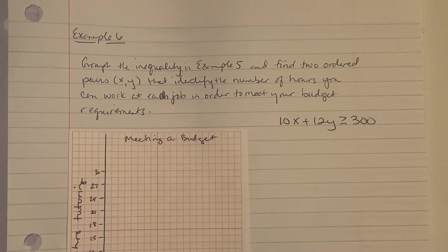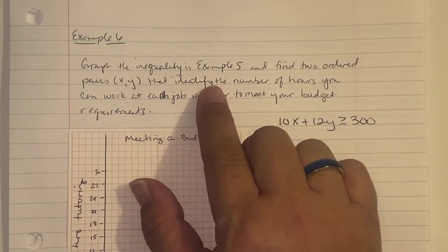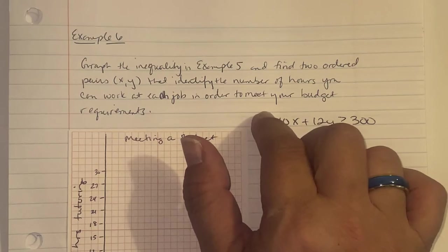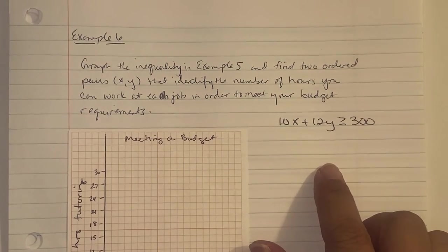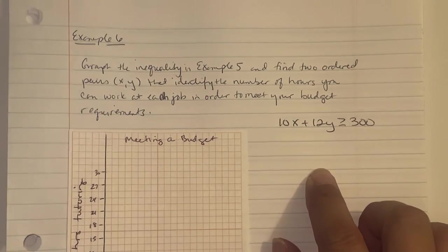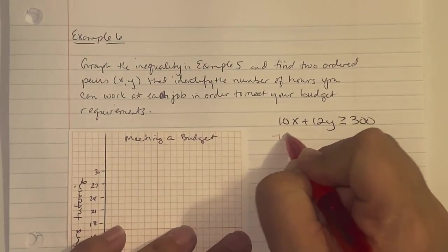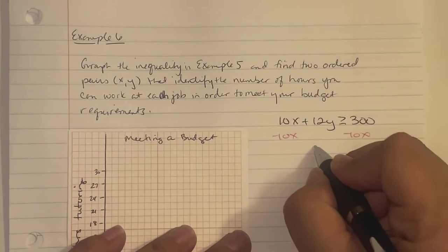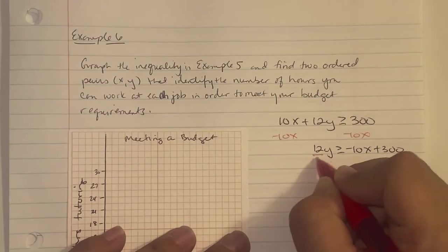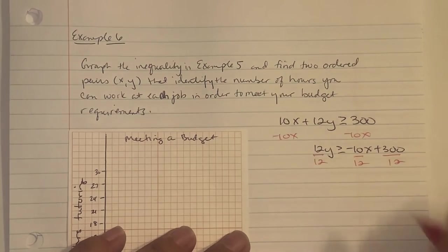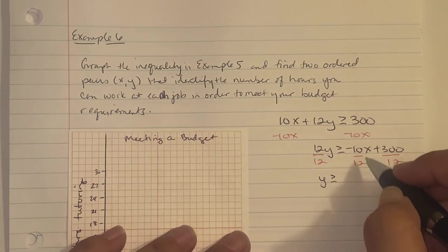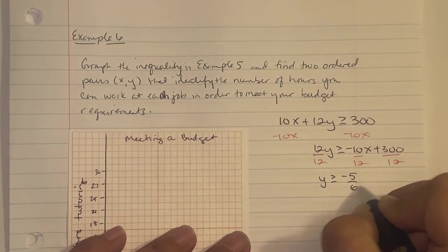Example 6 asks us to graph the inequality from Example 5 and find two ordered pairs that identify the number of hours you can work at each job to meet your budget requirements. We have 10X plus 12Y greater than or equal to 300. Solving for Y: subtract 10X — giving 12Y greater than or equal to negative 10X plus 300. Dividing by 12 — since 10 and 12 are both divisible by 2 — we get Y greater than or equal to negative 5/6 times X plus 25.